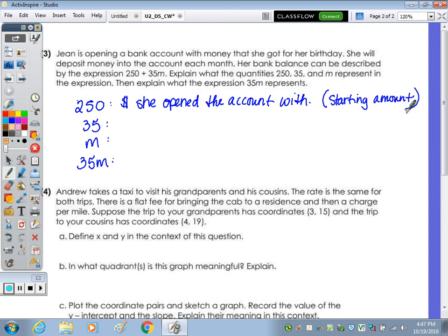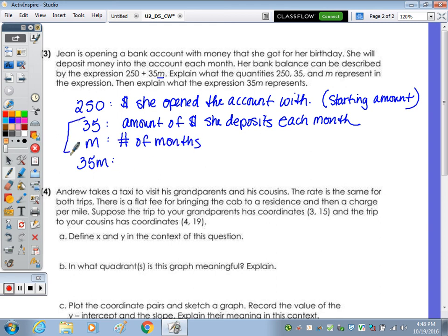The 35M represents the amount that she's going to deposit per month, so 35 is the amount of money she deposits each month. M is our number of months. Then putting these two together, 35M is going to be the total amount of money deposited after M months.